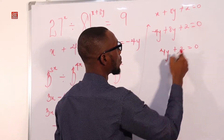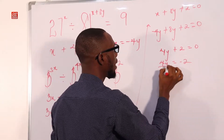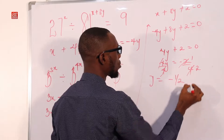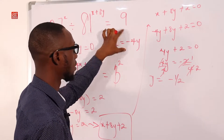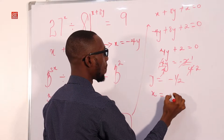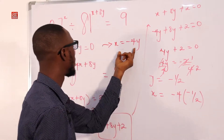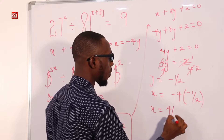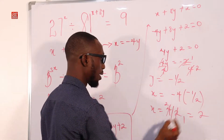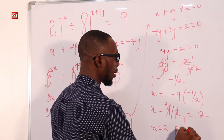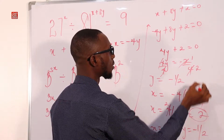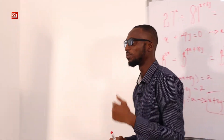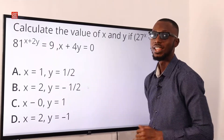Dividing both sides by 4 gives Y equals minus 1 over 2. Substituting into X equals minus 4Y: X equals minus 4 times minus 1 over 2. Minus times minus is plus. So X equals 4 over 2, which is X equals 2. Therefore X equals 2 and Y equals minus 1 over 2. Option B is the correct option.